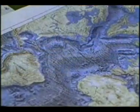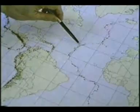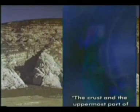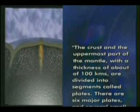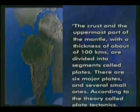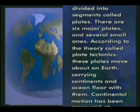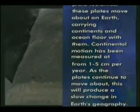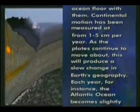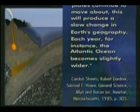Geologists discovered through geological research carried out at the beginning of the 20th century that the crust and uppermost part of the mantle, with a thickness of about 100 kilometers, are divided into segments called plates. There are six major plates and several small ones. According to the theory called plate tectonics, these plates move about on earth, carrying continents and ocean floor with them. Continental motion has been measured at from one to five centimeters per year. As the plates continue to move about, this will produce a slow change in earth's geography — each year, for instance, the Atlantic Ocean becomes slightly wider.